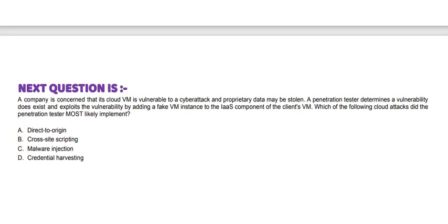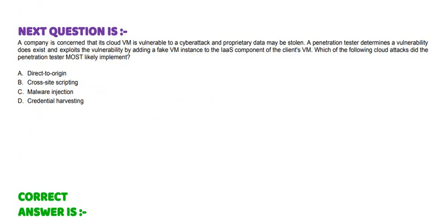Next question is: A company is concerned that its cloud VM is vulnerable to a cyber attack and proprietary data may be stolen. A penetration tester determines a vulnerability does exist and exploits it by adding a fake VM instance to the hypervisor component of the client's VM. Which of the following cloud attacks did the penetration tester most likely implement? Option A: Direct to origin. Option B: Cross-site scripting. Option C: Malware injection. Option D: Credential harvesting. And the correct answer is Option C.